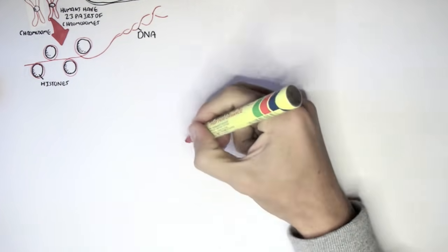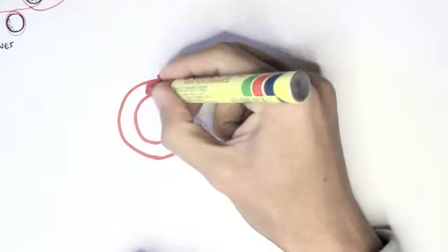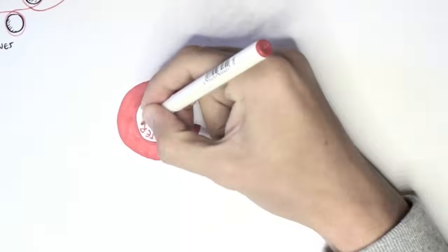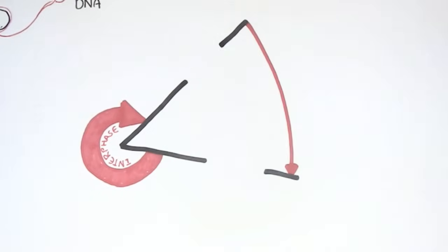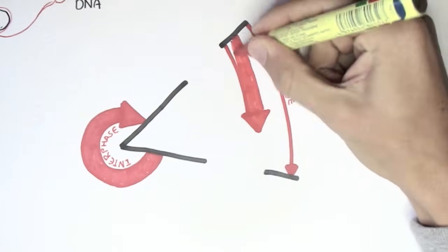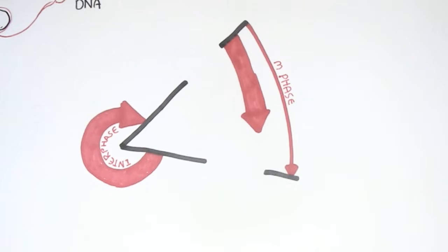The cell cycle is divided into two main phases: the interphase, which prepares the cell for division, and then the M phase, where the division process actually occurs. The division process is known as mitosis.